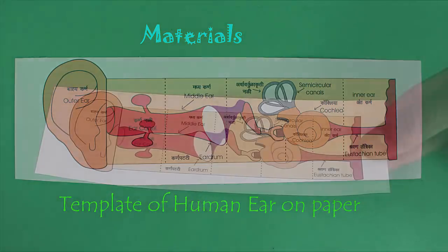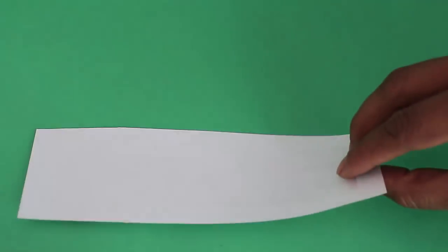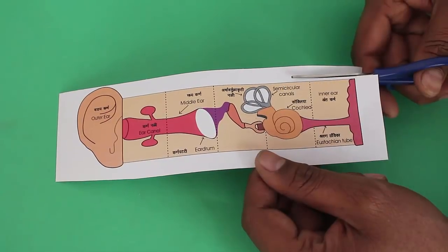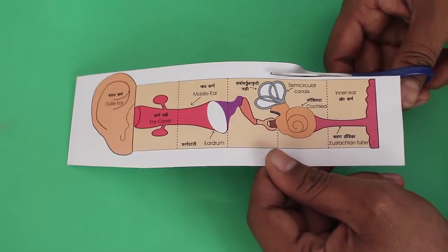You can take a screenshot of this template and then print it out. Folding and subsequently opening the template will help us understand the path which sound takes to reach our brains.